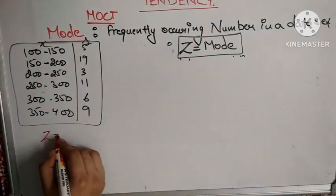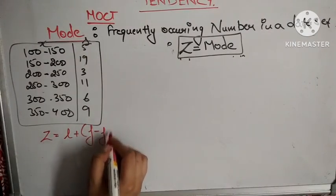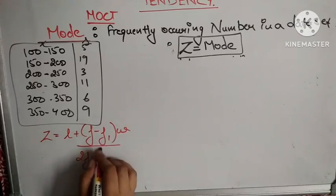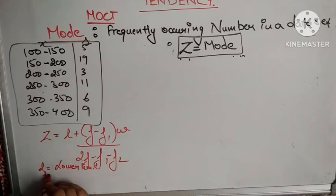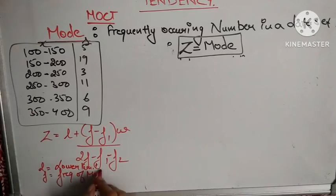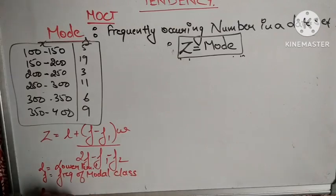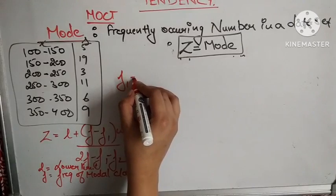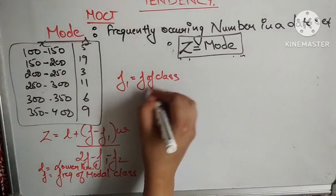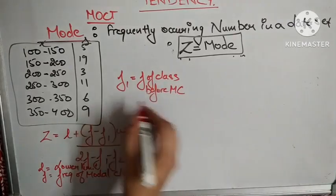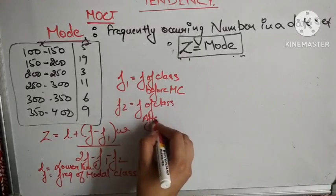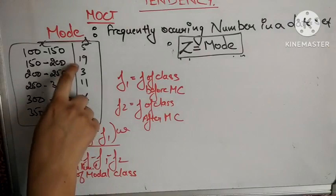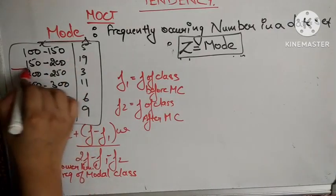The formula for mode in a continuous frequency table is: Z = L + [(f − f1) × width] / (2f − f1 − f2), where L is the lower limit of the modal class, f is the frequency of the modal class, f1 is the frequency of the class before the modal class, and f2 is the frequency of the class after the modal class.